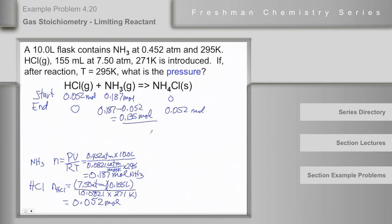So, we now will solve this for P, N, R, T, over V, and N is 0.135, and R and T, and V. V is 10 liters, it's in the bulb, this is T up here, this is 295, and V is 10 liters. And the answer I got was 0.326 atmospheres.